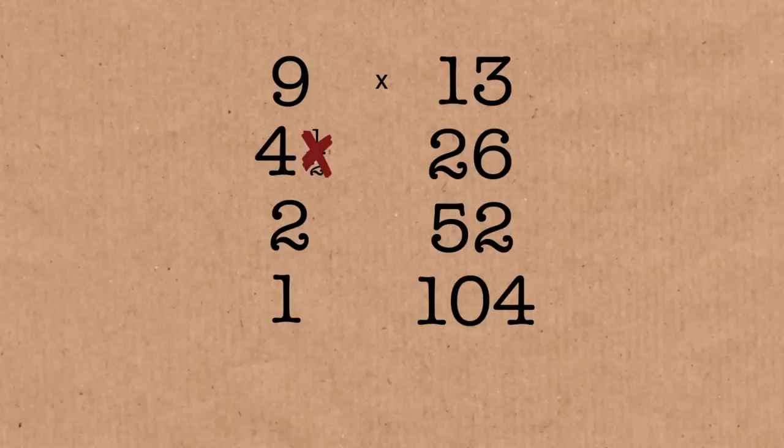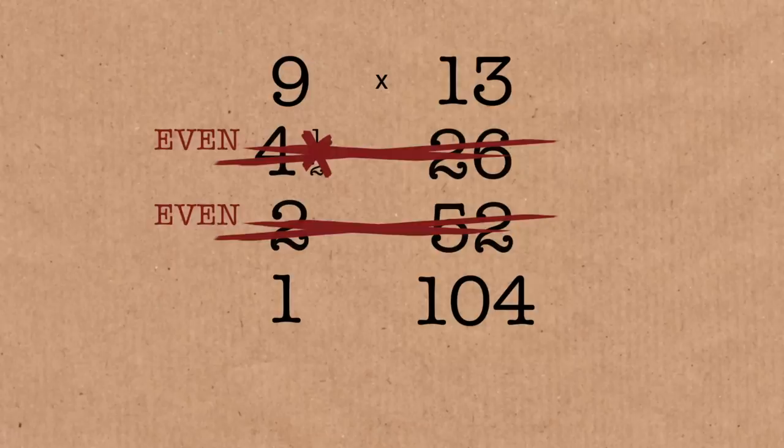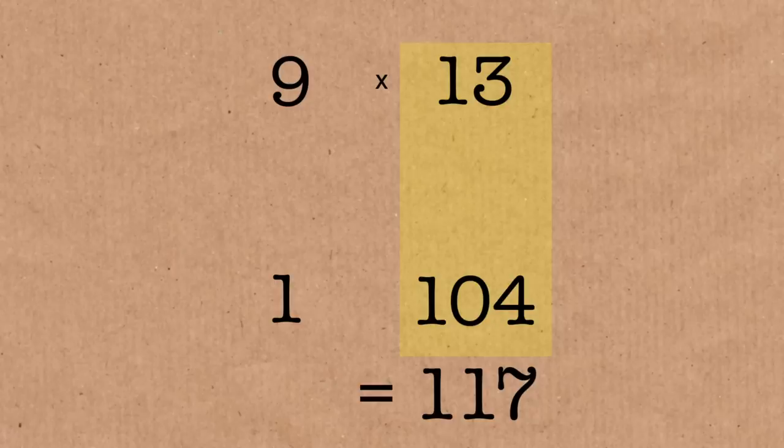Let's have a look. Well, that's odd. But that's even. So out goes the whole row. That's even. Out goes the whole row. That's odd. So what you've got left you adds up. 13 and 4 is 17 plus 100. And would you believe 9 times 13 equals 117. And that works with any numbers every single time.